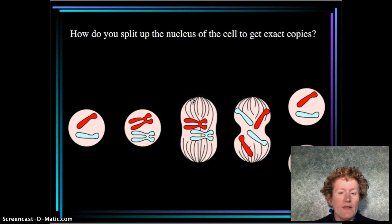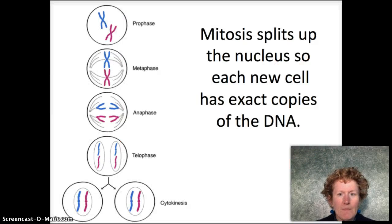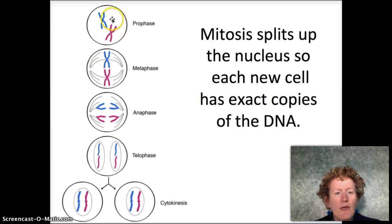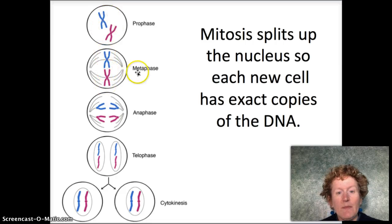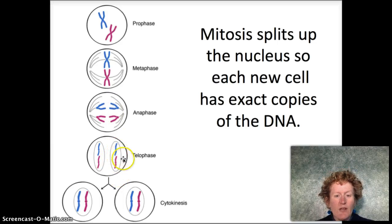To split up the nucleus and get two exact copies, the PMAT process happens: prophase, metaphase, anaphase, and telophase. In prophase you can just see the chromosomes. In metaphase they line up in the middle — meta means middle. In anaphase they're pulled to opposite ends. In telophase the cell is starting to split off. And in cytokinesis you've got two different cells.